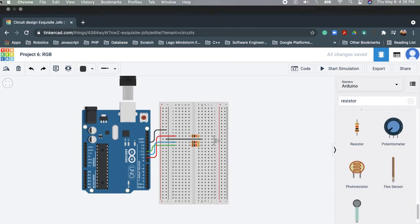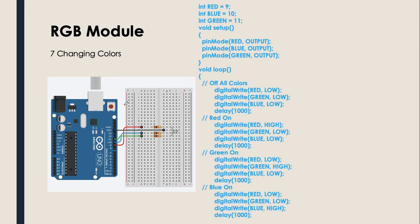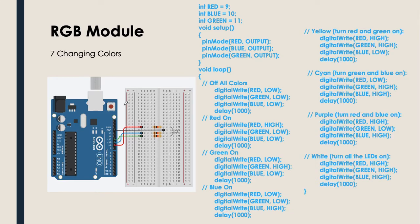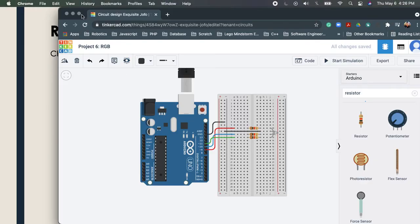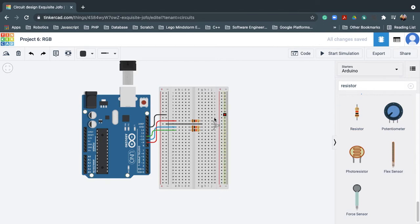I also inserted the codes in the PowerPoint presentation or in the PDF file linked in our Google Drive, so you may also refer to that. Next, we will be changing the colors randomly. We will still be using the same project — we just need to change the codes.